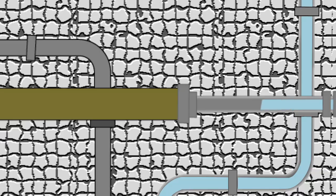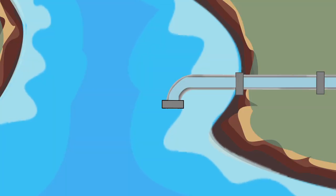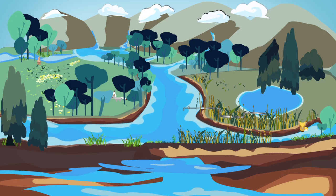Before the pipes that lead to our home, even before the complicated process of treatment and disinfection that makes raw water drinkable, it starts here at the source. In Pennsylvania, our source water can be from surface water like our rivers, lakes, and streams, or groundwater—the aquifers that lie beneath the earth.